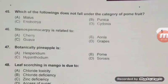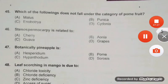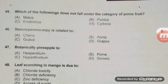Which of the following does not fall under the category of pome fruit? Punica is a balausta type — right answer B. Question 46: Stenospermocarpy is related to seedlessness in grape — D is the right answer. This question is also repeated in JRF 2018; please consult the previous video.